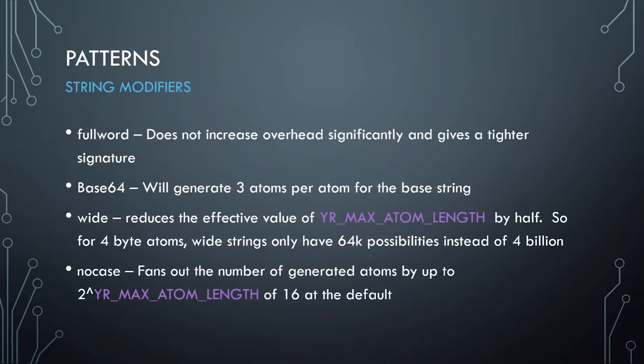As for string modifiers: fullword doesn't really have any performance impact and tends to give slightly tighter signatures — it effectively checks for a non-character byte on either side of the word, so it's trivial. Base64 generates three atoms for the base string and does three comparisons instead of one, which is not too bad — especially if that's what you're looking for.